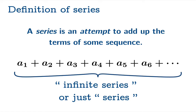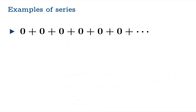An infinite series is simply an attempt to add up the terms of some sequence. And 'attempt' is the key word here, because it's not obvious that this attempt should succeed or fail. In fact, we have to figure out the conditions under which we're going to declare victory or defeat. There are some series which should behave pretty obviously. For example, if we tried to add up the constant sequence zero — zero plus zero plus zero, etc. — we really expect this series to add up to zero.